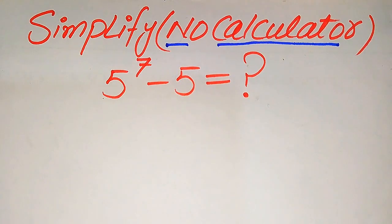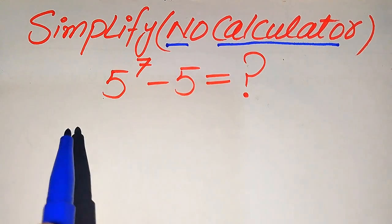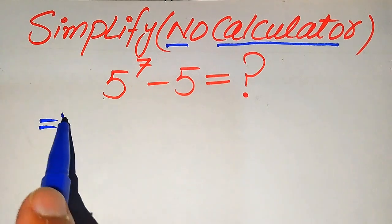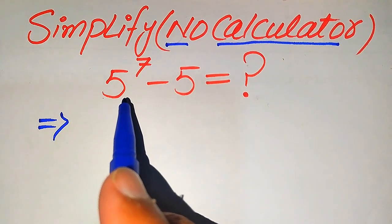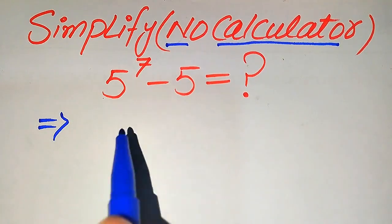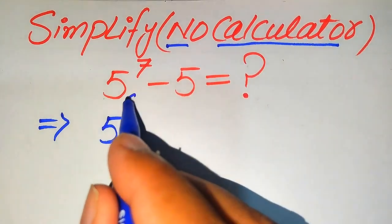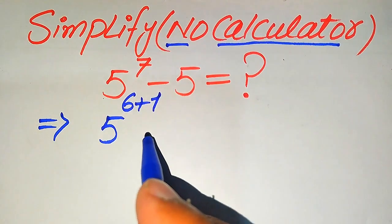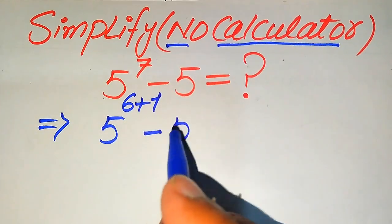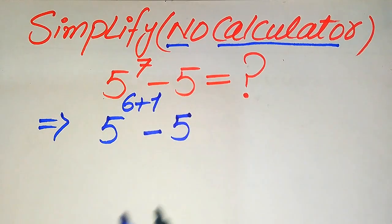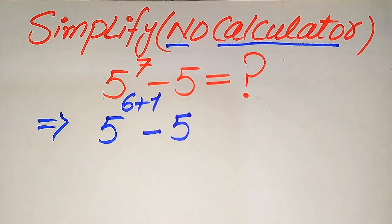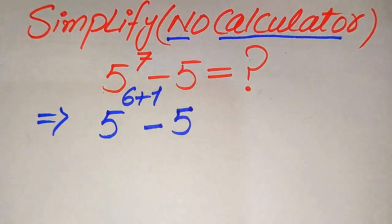The very first thing we are going to do is focus on the exponent of this 5. We break the 7 as 6 plus 1, so we have 5 to the power of 6 plus 1, minus 5. We use a nice exponential law to simplify the first term.